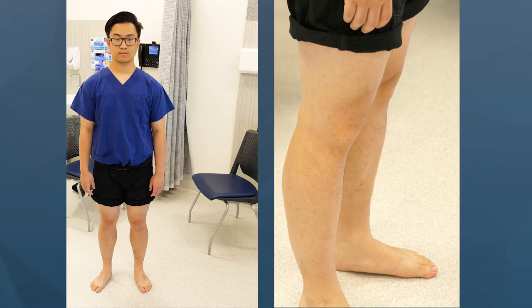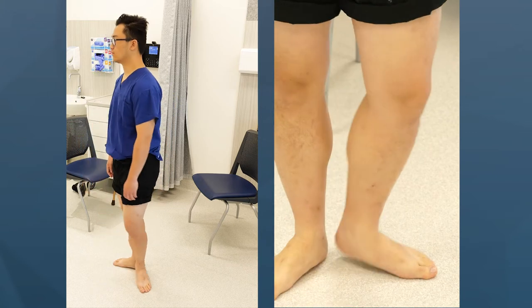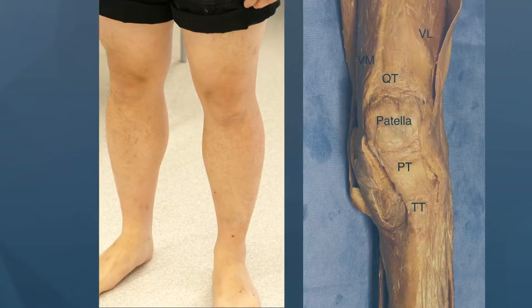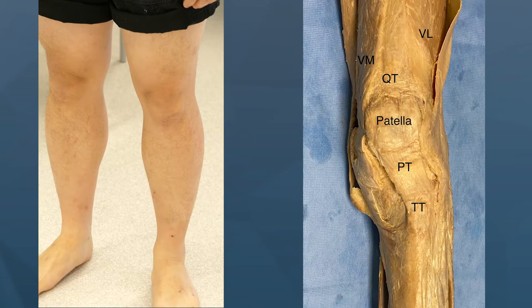Ask your patient to turn sequentially rather than you moving around them. Globally, from all views, assess posture, skin changes such as swelling and scars, shape and symmetry, comparing to the contralateral side. From the front, comment on muscle bulk including quadriceps, any swellings, and coronal plane deformity such as genu varum or genu valgum.